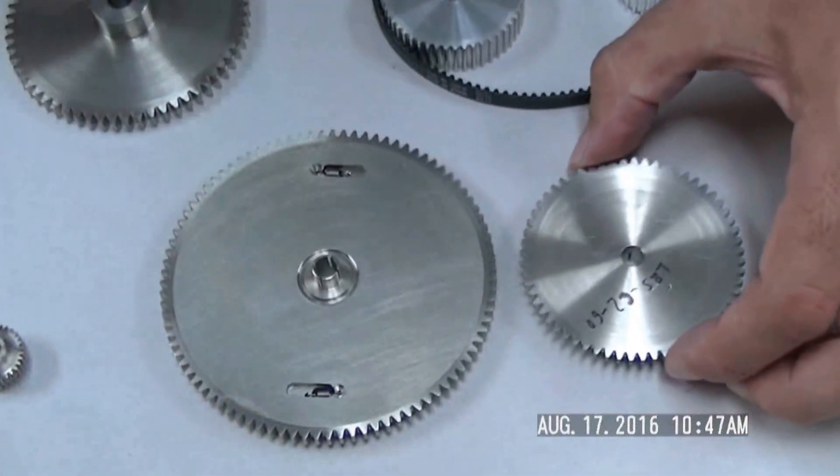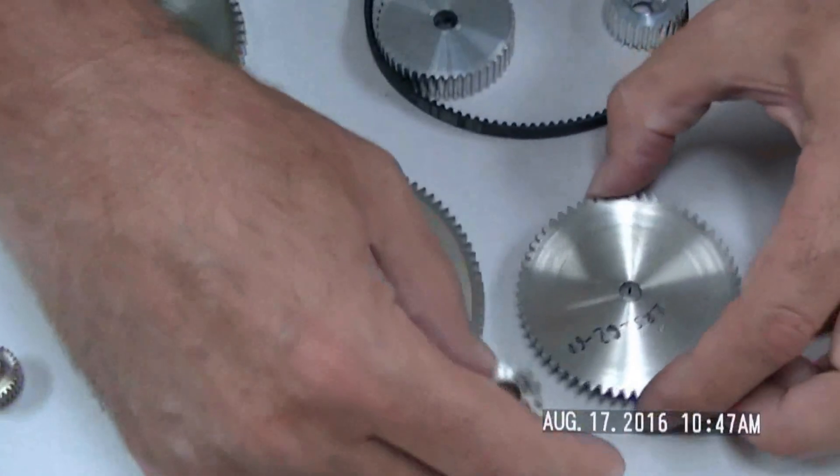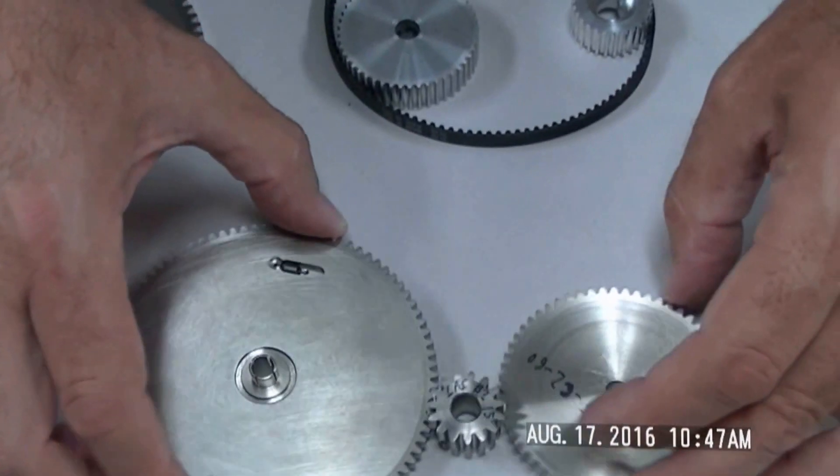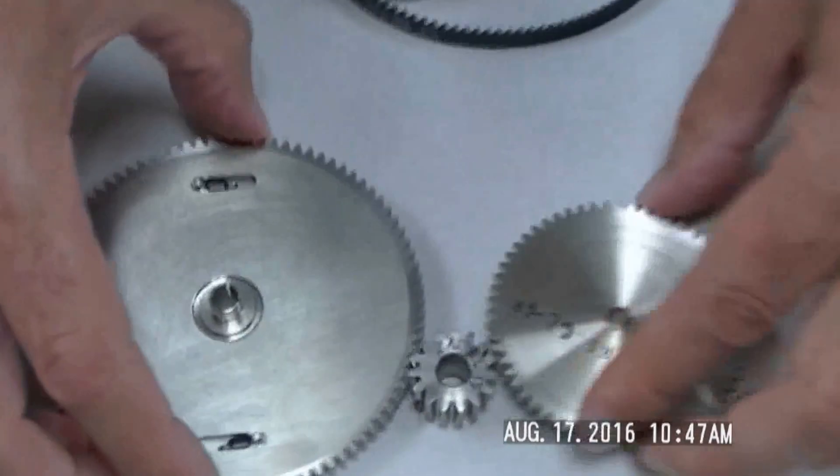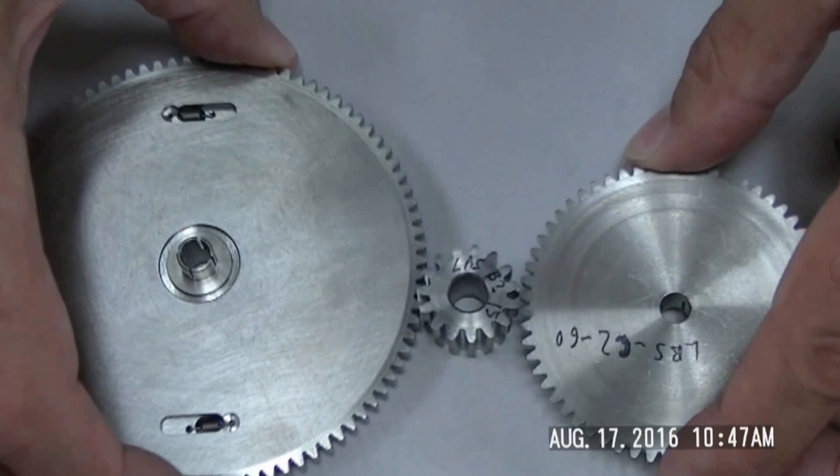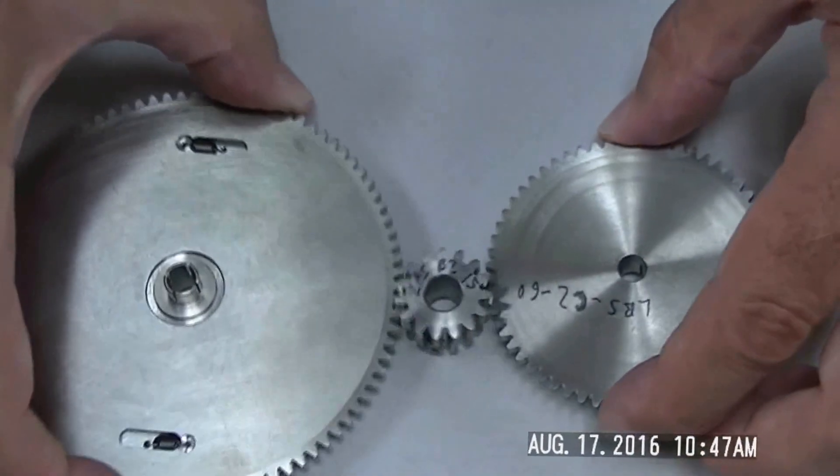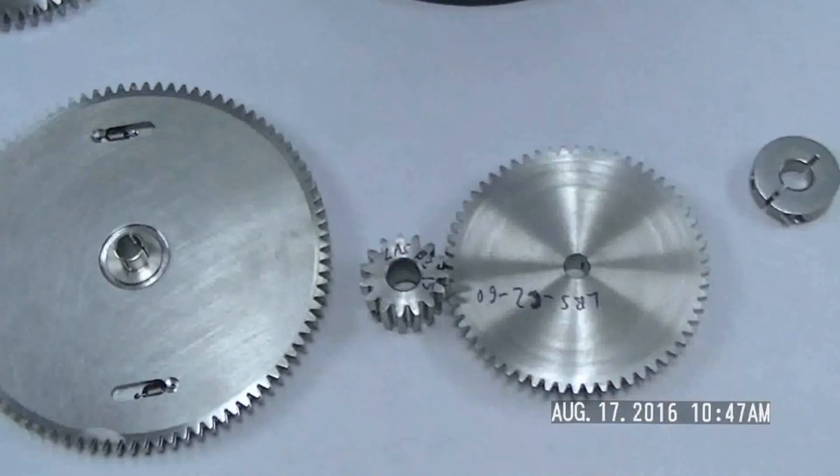If you want to reverse rotation, I can put an idler in between these two, and it would pretty much reverse rotation like that. It's a very crude way of showing it, but just to give you an idea of what we do.